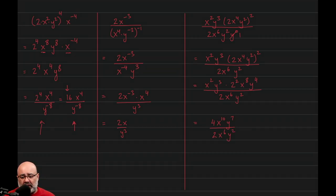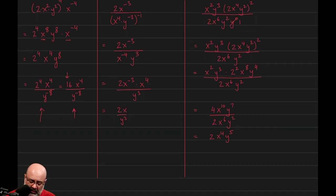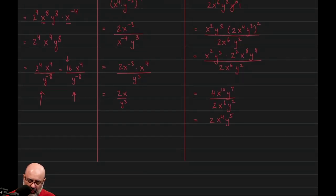At this stage, we can use the quotient property. So 4 divided by 2 is just 2. x to the 10th divided by x to the 6th is x to the 4th. y to the 7th divided by y to the 2nd is y to the 5th. But since we need the x's on top and y's on the bottom, we can rewrite this to be 2x to the 4th over y to the negative 5th.